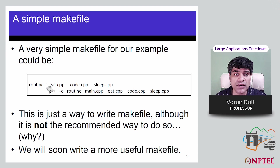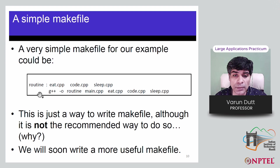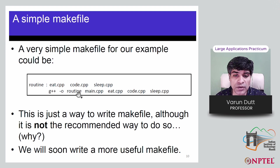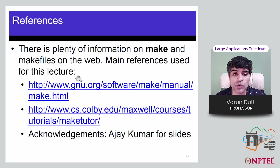For example, a recipe in a makefile could look like: 'routine : main.cpp code.cpp eat.cpp sleep.cpp', followed by a tab and then the g++ statement. When you write make, it will find this rule, execute the prerequisites, and a 'routine' executable will be created. The problem is that this particular statement is called every time make is run. In the next part of this series we will look at how to make make more usable by only compiling files which have changed.